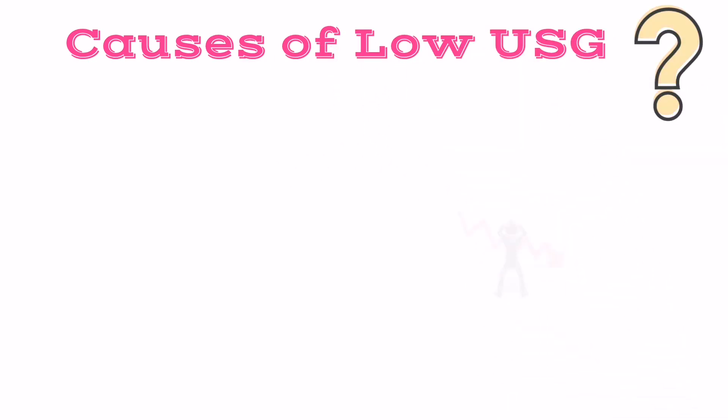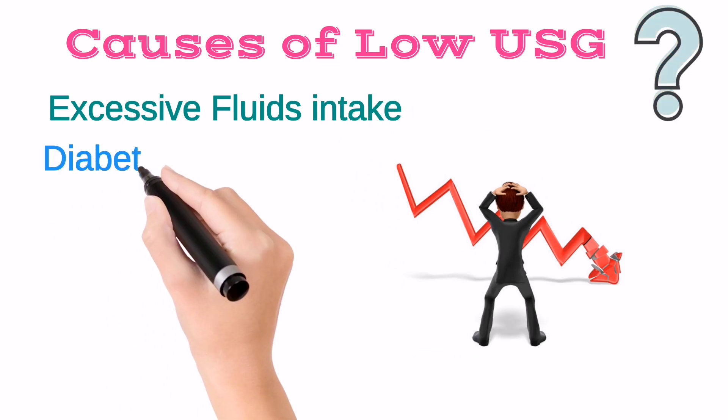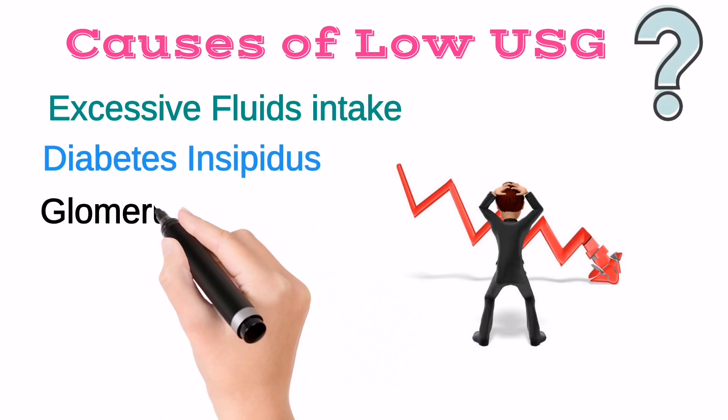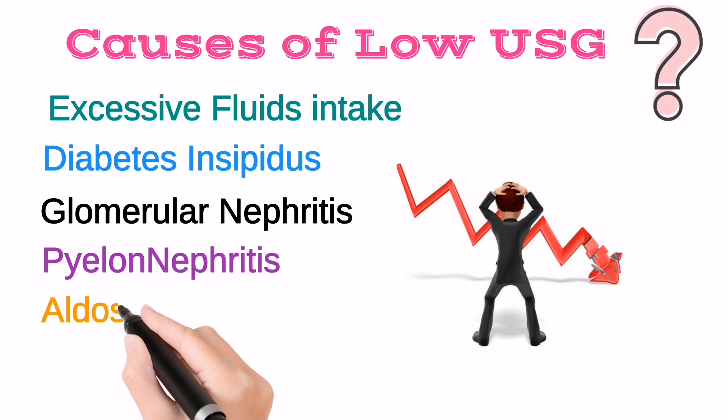Now what are the causes of low USG? These are excessive fluid intake, diabetes insipidus, glomerulonephritis, pyelonephritis, aldosteronism, and low sodium level, etc.